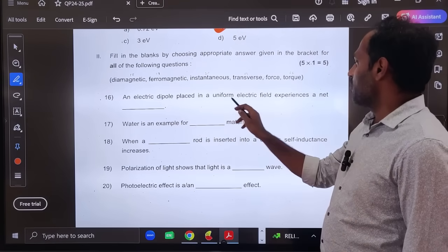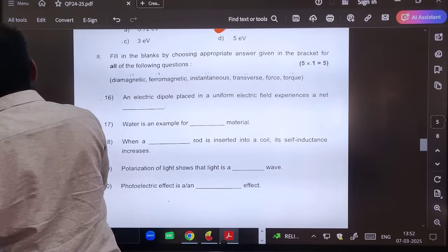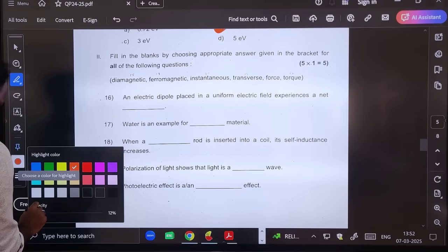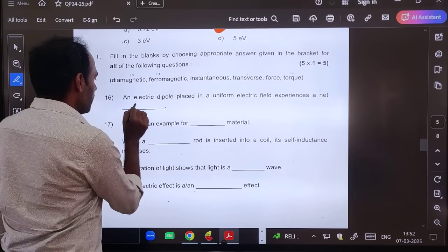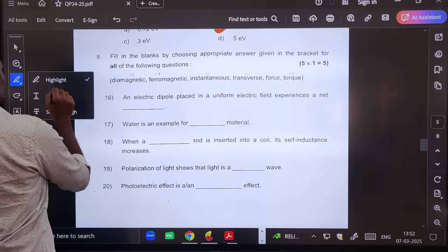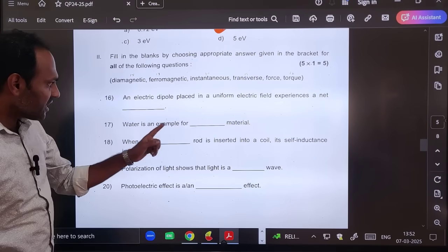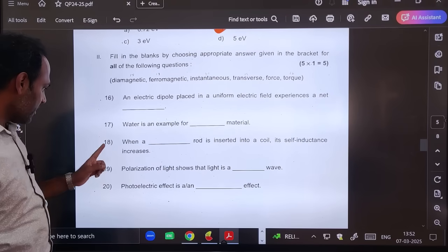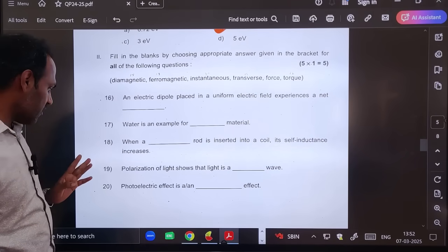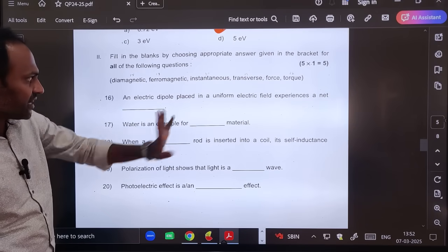Let us go for the blanks directly. An electric dipole placed in a uniform electric field experiences net torque. So the answer for 16th question is torque. Water is an example of diamagnetic material. 18th one: When ferromagnetic rod is inserted into a coil, its self-inductance increases. Polarization of light shows that light is transverse in nature. Photoelectric effect is instantaneous.